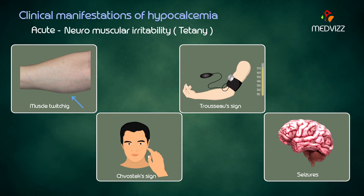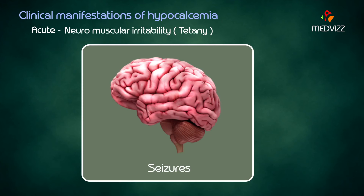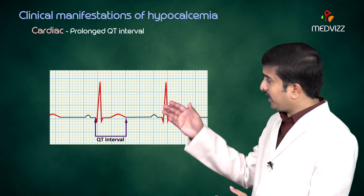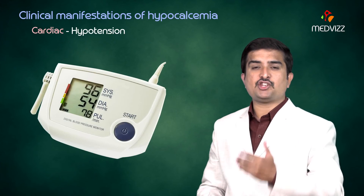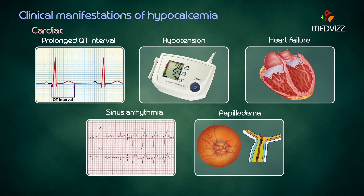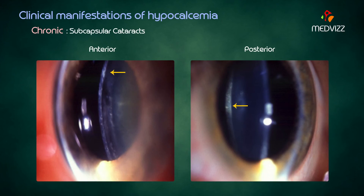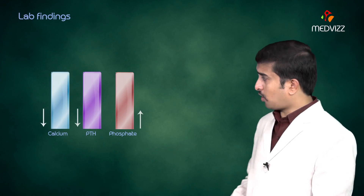The acute manifestations of hypocalcemia or hypoparathyroidism are predominantly neuromuscular irritability: tetany is the first initial sign, associated with muscle twitching, Trousseau's sign, Chvostek's sign, and seizures in later stages. Cardiac abnormalities include prolonged QT interval, hypotension, heart failure, arrhythmia, and papilledema. In chronic hypocalcemic states, manifestations include ectopic calcification, extrapyramidal signs, parkinsonism, dementia, and subcapsular cataracts.